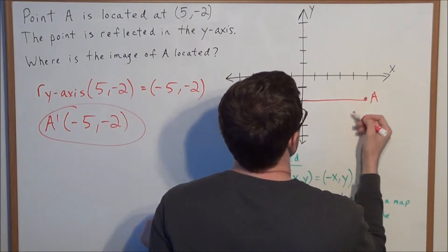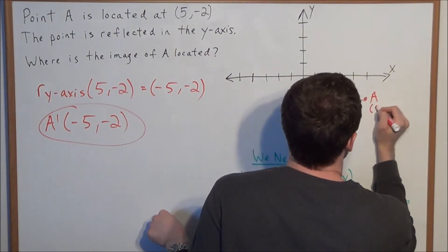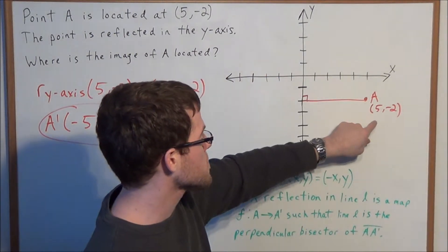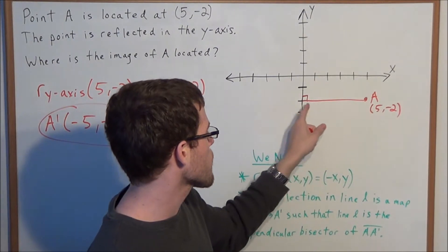And now how long is this line? Well, we're at the point 5, negative 2. So the horizontal distance we're traveling is 5, and we could even count it back. We're going 1, 2, 3, 4, 5 units back.